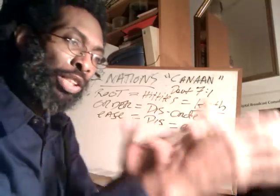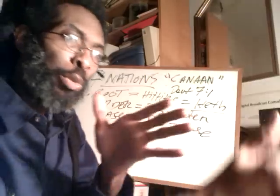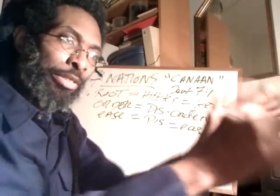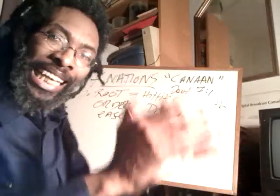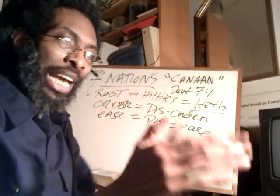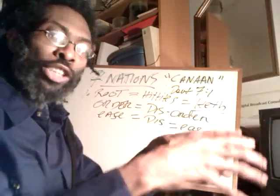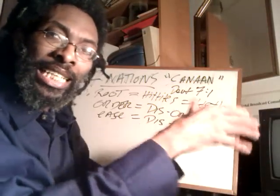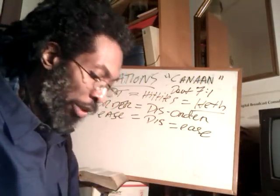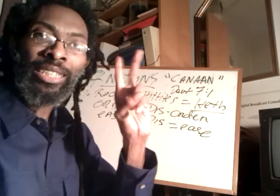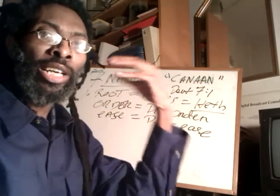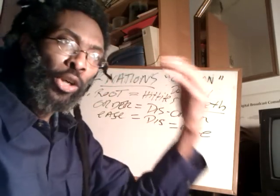But what is the metaphysical overstanding? When we talk about the seven nations of Canaan, we're talking about seven types of spirits — seven types of demonic entities or negative energies that have occupied the seven seats of God's life in man, which are the seven chakras.